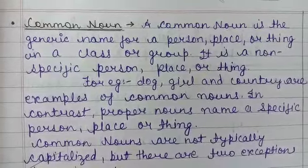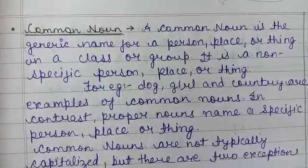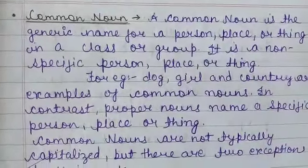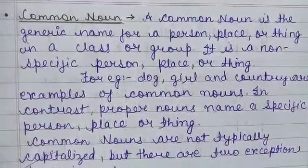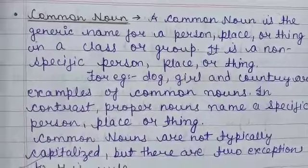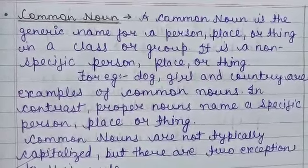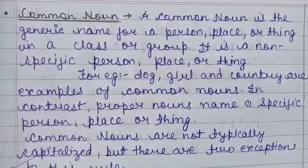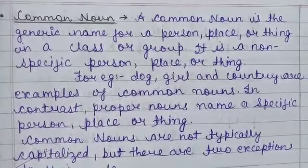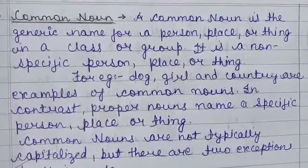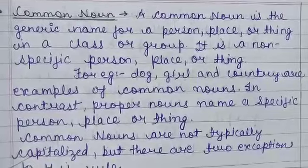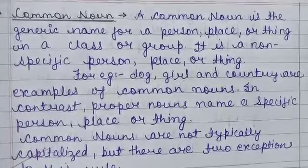A common noun is the generic name for a person, place or thing in a class or group. It is a non-specific person, place or thing. For example, dog, girl, and country are examples of common nouns.